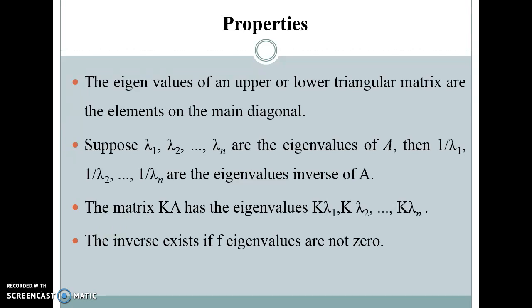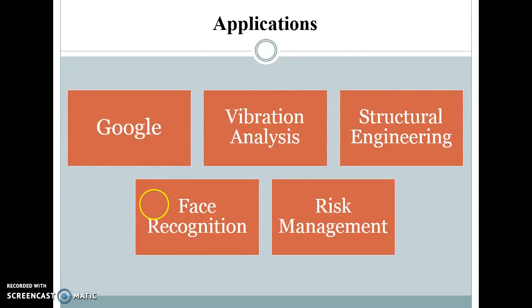Now let us see the applications where eigenvalues are used. Google uses the eigenvector corresponding to the maximal eigenvalue of the Google matrix to determine the rank of a page for search results. When there is a Google search, the rank of the page is determined using eigenvalues and eigenvectors.